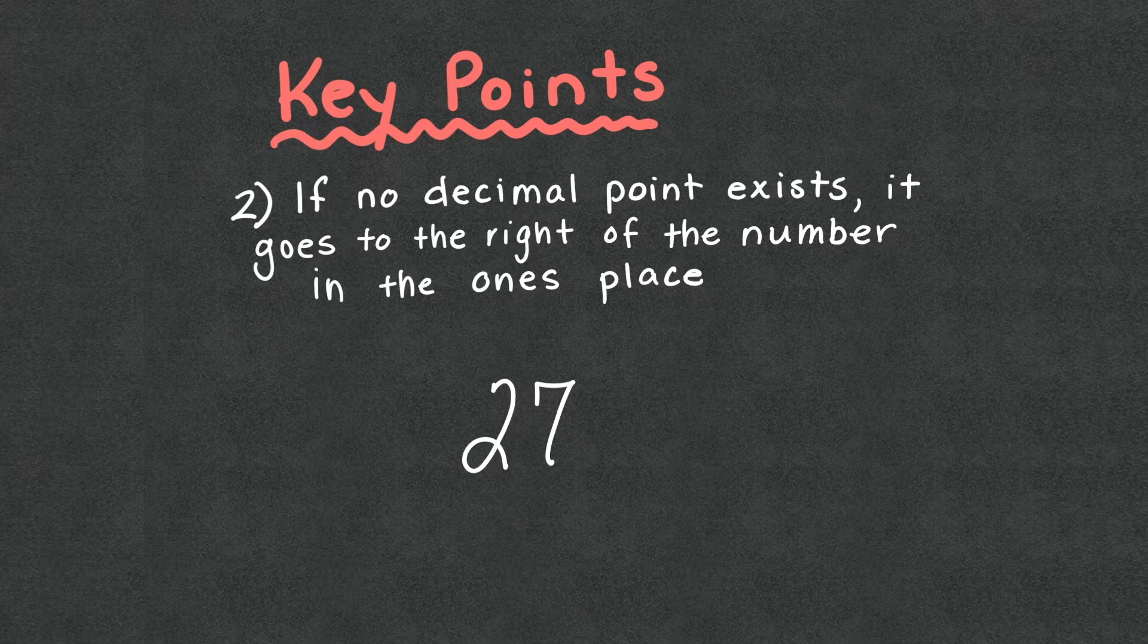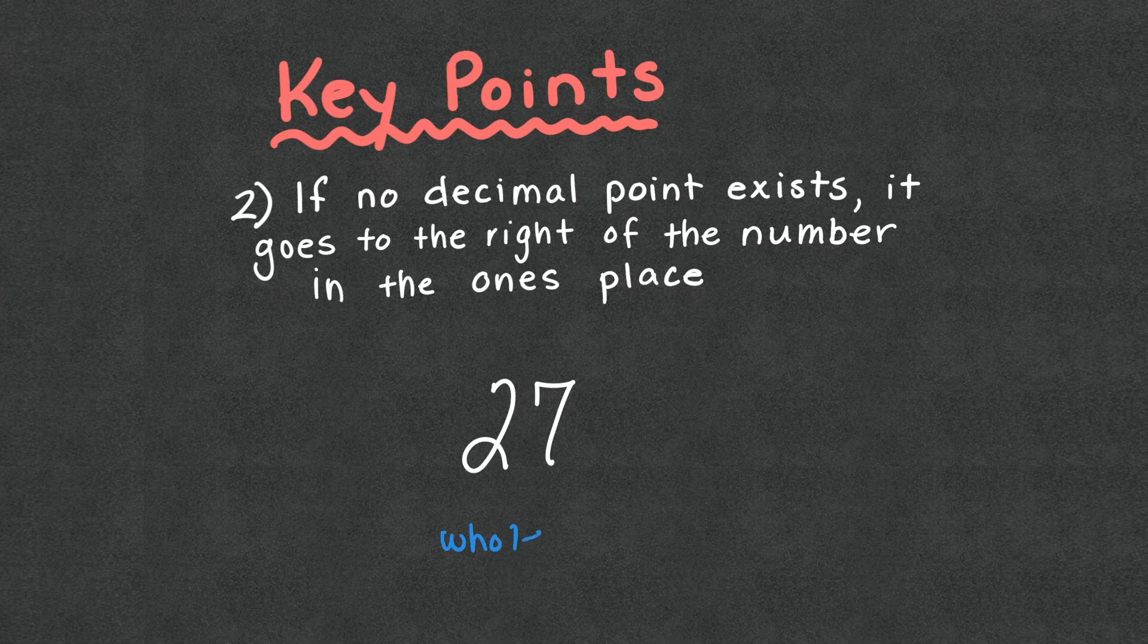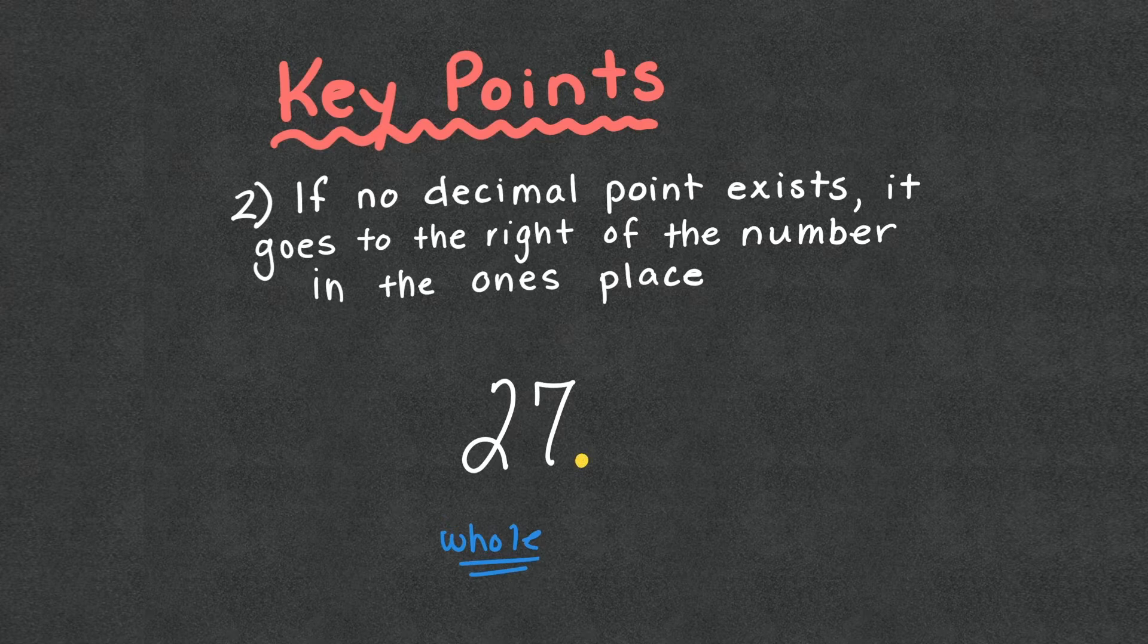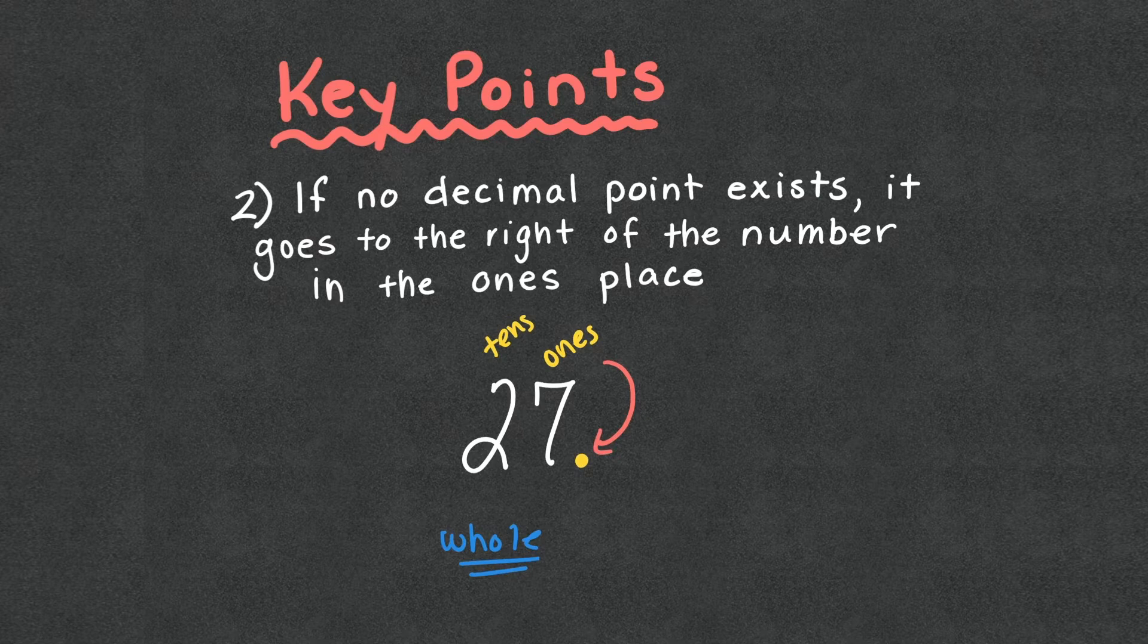If there is no decimal point, it goes to the right of the number in the ones place. So this number right here is a whole number. How do we know it's a whole? Because there is no decimal piece. But once we have that, it goes here. This is the tens place, the ones place, which leads us to our decimal point to go to the right of the ones place. This is going to be helpful if you have whole numbers or when you do have whole numbers in your problems.